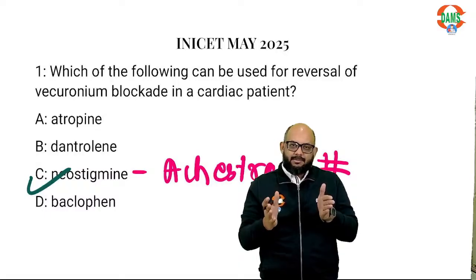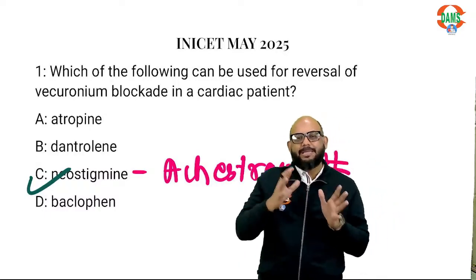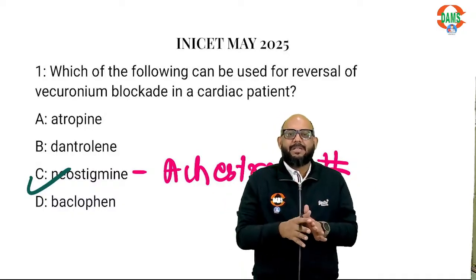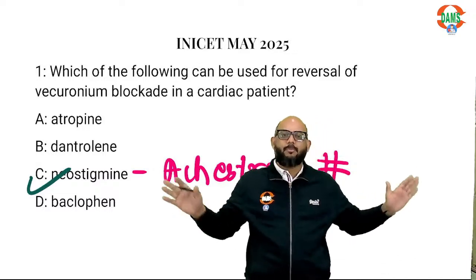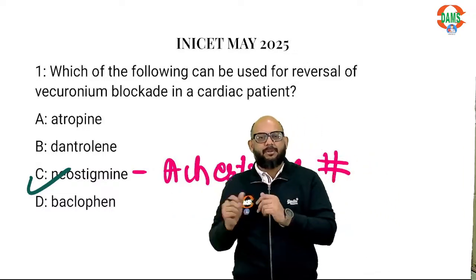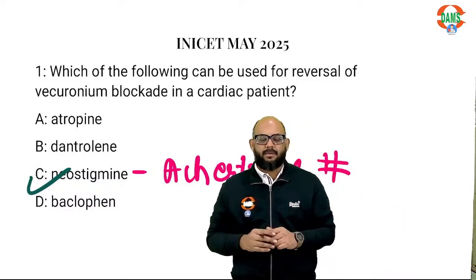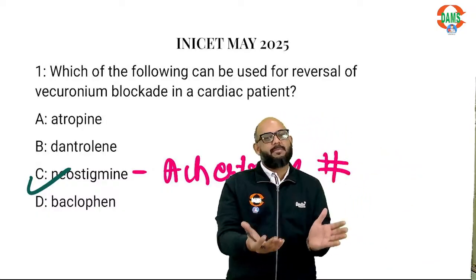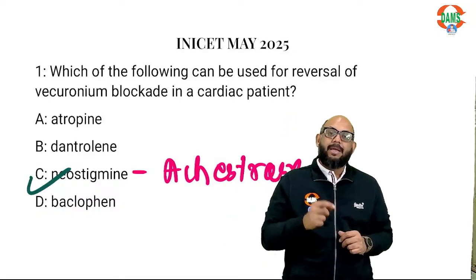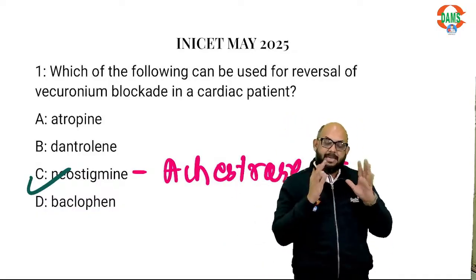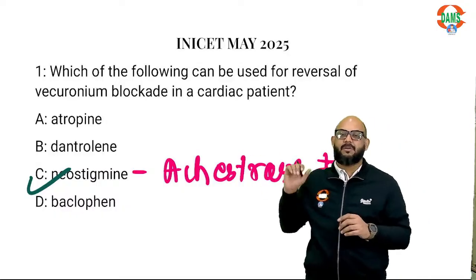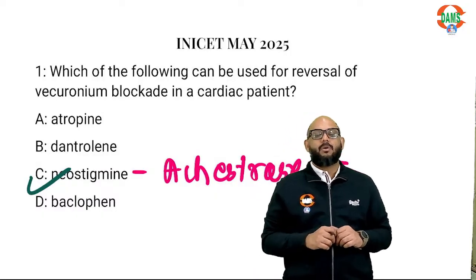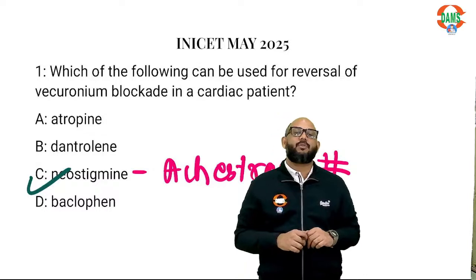But there is a caveat — cholinesterase inhibitors are non-specific, meaning they will increase acetylcholine concentration in the entire body. We have two types of acetylcholine receptors: nicotinic and muscarinic. When there is stimulation at nicotinic acetylcholine receptors, the muscle starts to contract — but what if acetylcholine increases at the muscarinic receptors?